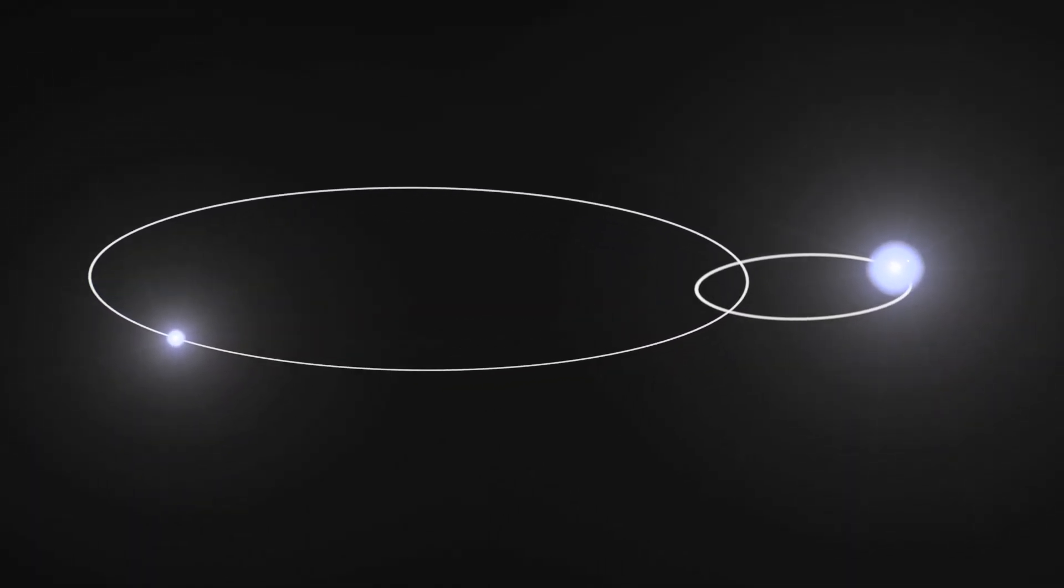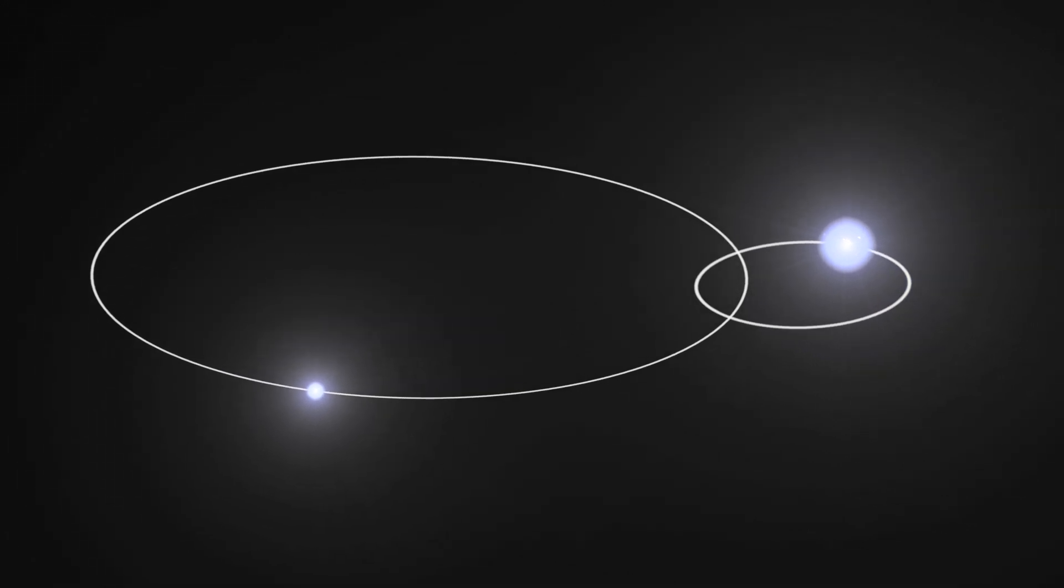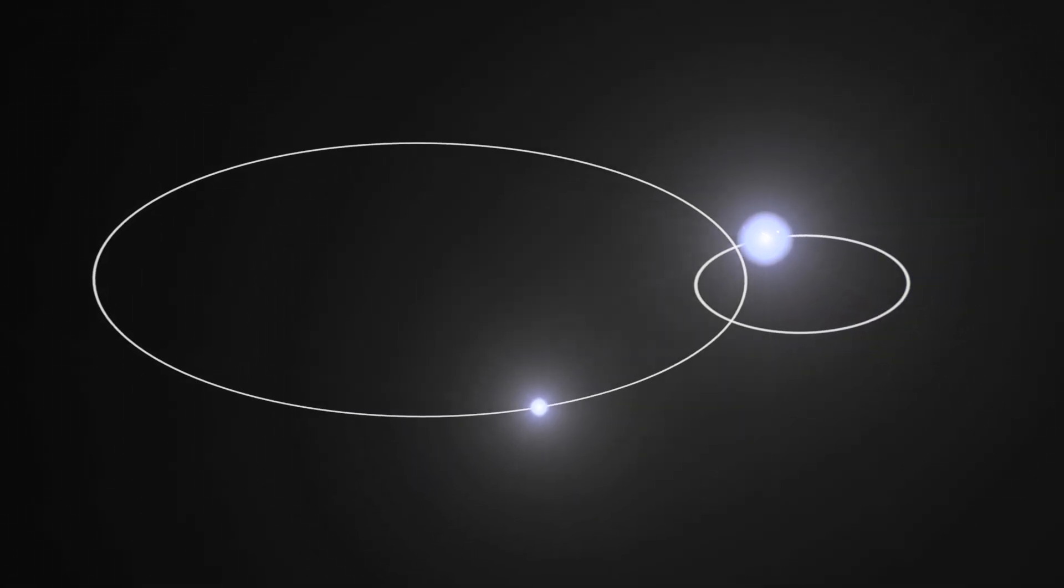The secondary's orbit is among the most eccentric known. Every five and a half years, when the two stars swing toward closest approach, or periastron, they come about as close to each other as Mars is from the Sun.